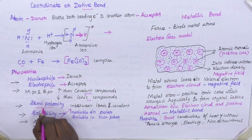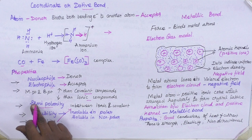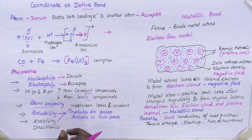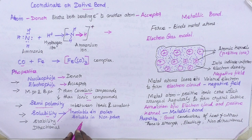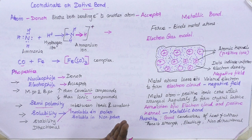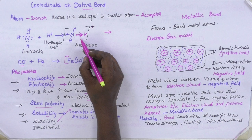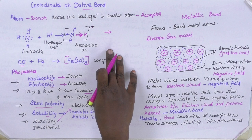Ionic compounds are very high in all properties, while covalent compounds are lower; the coordination compound sits in between. Even in polarity, coordination compounds are semi-polar — not non-polar like a covalent molecule, and not highly polar like an ionic molecule. In solubility, they are most probably soluble in non-polar solvents and insoluble in polar solvents. In stability, they are somewhat more stable than covalent but less stable than ionic compounds. In terms of bond directionality, coordination bond is directional, like a covalent bond.